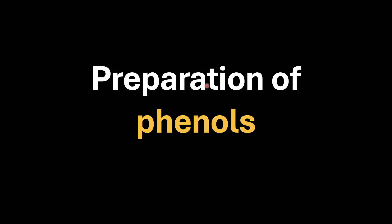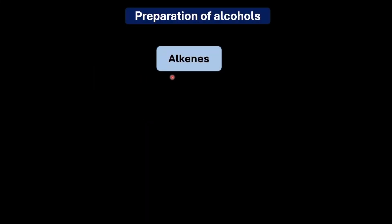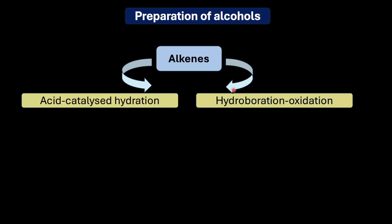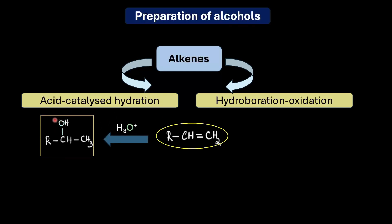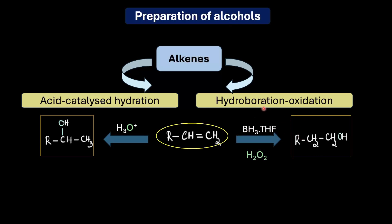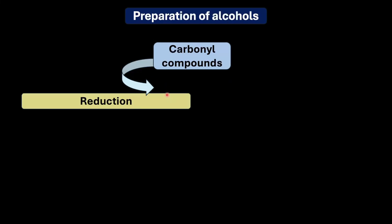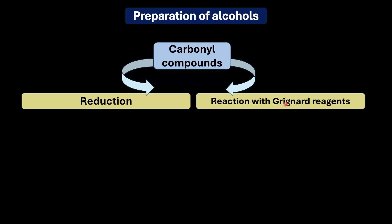In the previous sections we talked in detail about the various ways in which alcohols can be prepared — like from alkene we get alcohols via acid catalyzed hydration or via hydroboration oxidation reaction. In the first case we get an alcohol where the OH group is attached to the most substituted carbon atom, and if we want the OH group on the less substituted carbon we employ hydroboration oxidation. We can also obtain alcohols from carbonyl compounds via reduction using reducing agents like lithium aluminum hydride or sodium borohydride, and also by reaction with Grignard reagent.